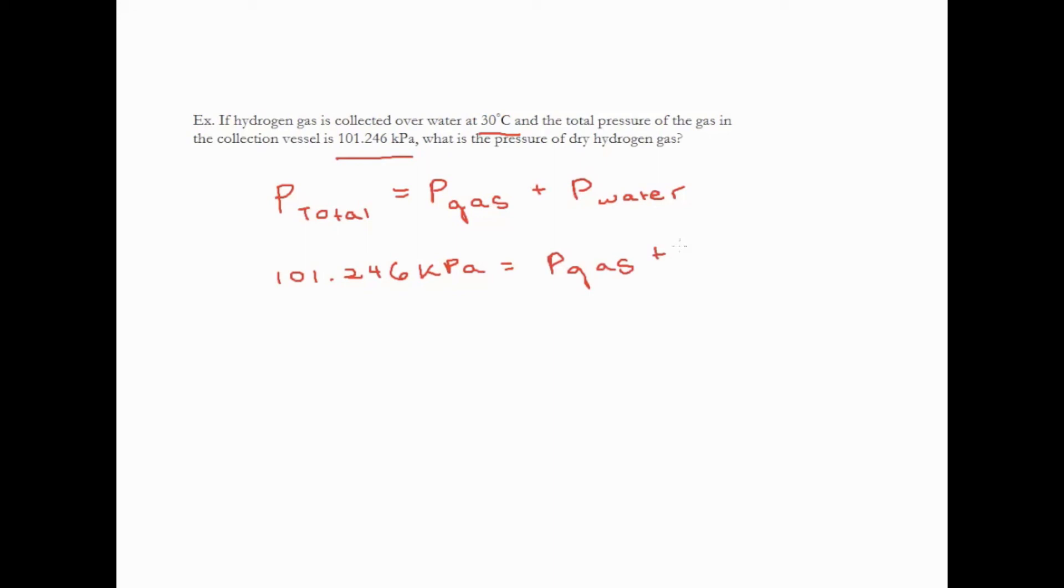So the vapor pressure at 30 degrees Celsius is going to be 4.246 kilopascals. And I just looked that up on the table. And so based on that, I can determine that the pressure of just the gas, ignoring the water vapor, is going to be 97.000 kilopascals.